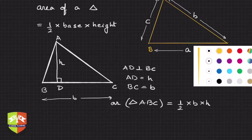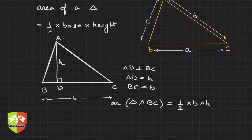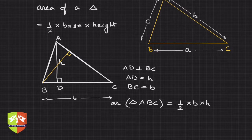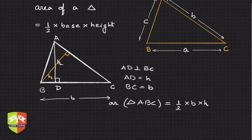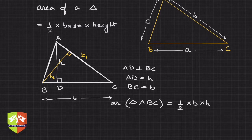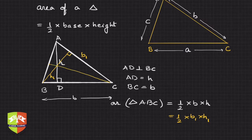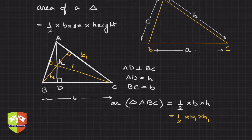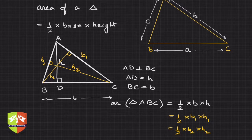Now b and H could be different for different sides. For example, you can also drop a perpendicular like that, and let's say this is H1 and this side is b1. Then this also will be equal to half into b1 into H1. Similarly, if you drop a perpendicular from C onto AB, this will also equal half into b2 into H2. So base and corresponding altitude if you multiply and divide by 2, you will get the area of triangle.